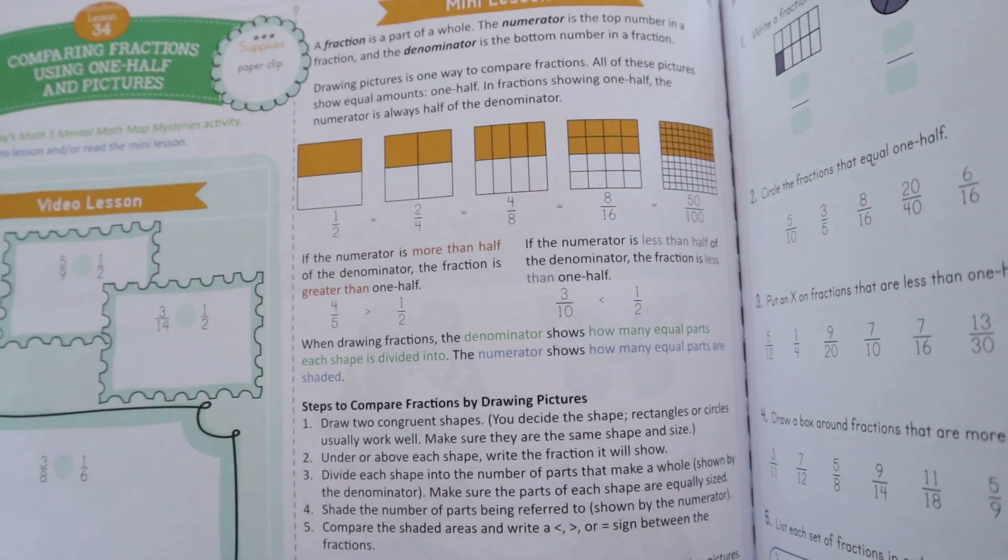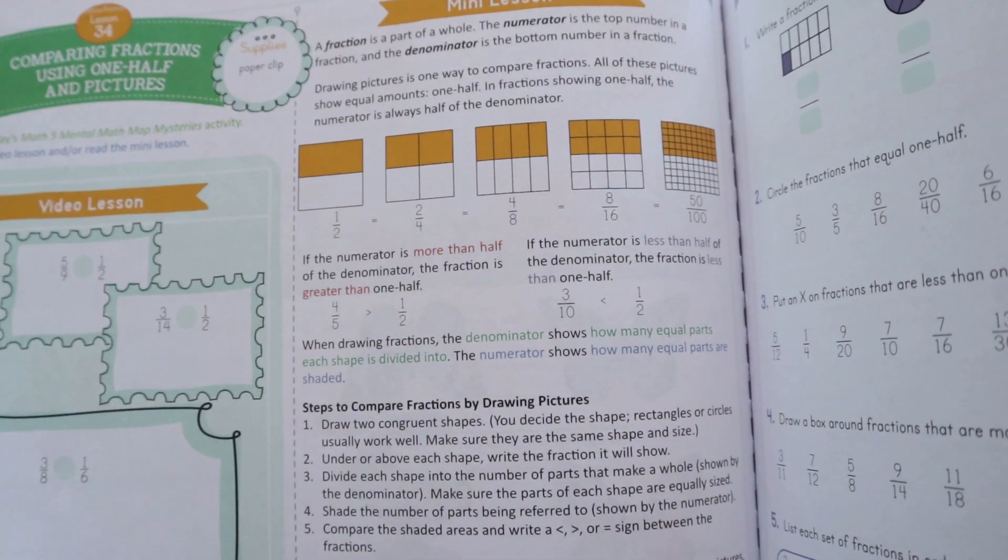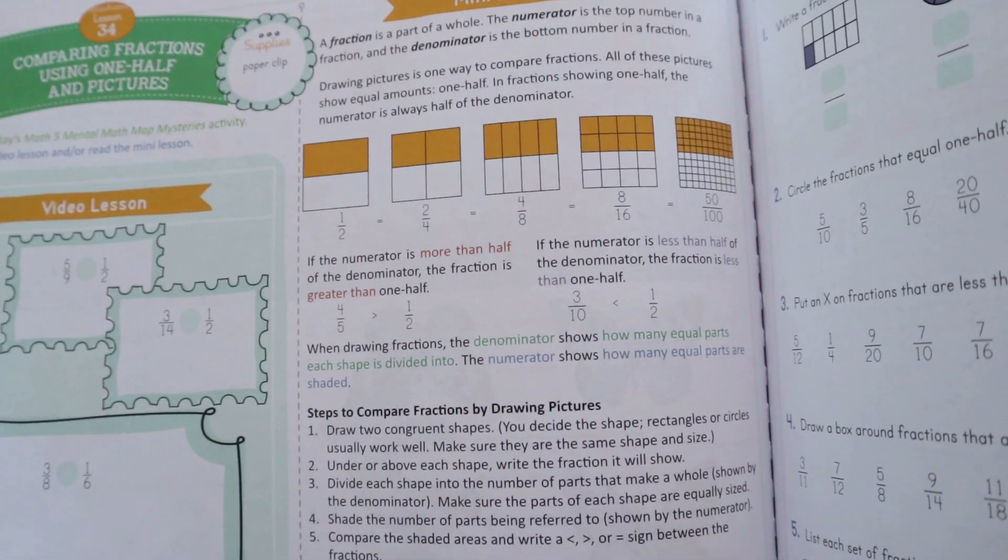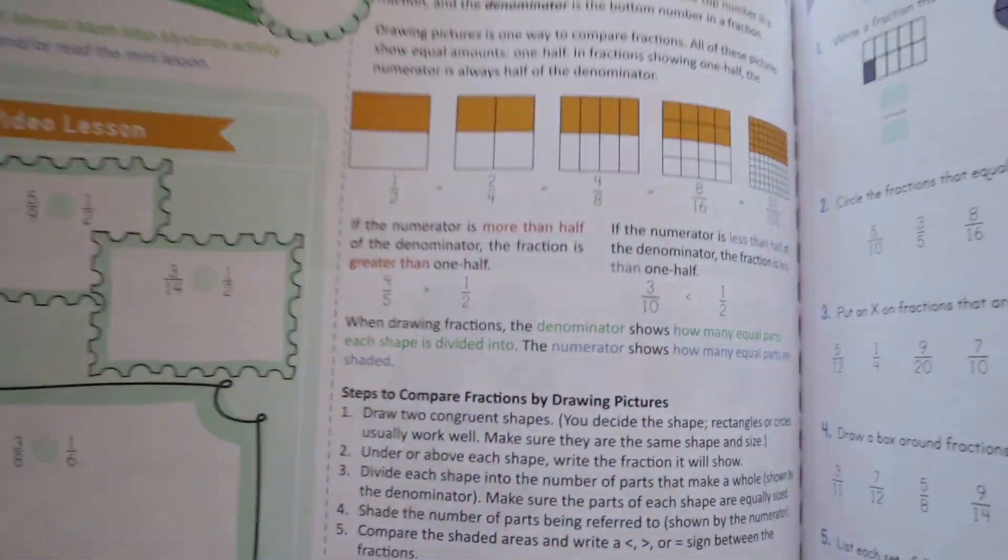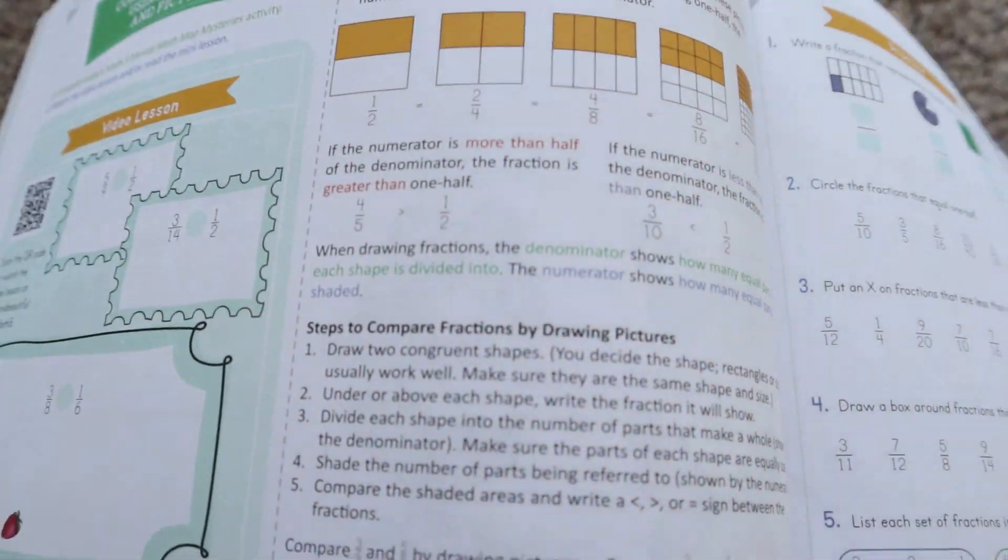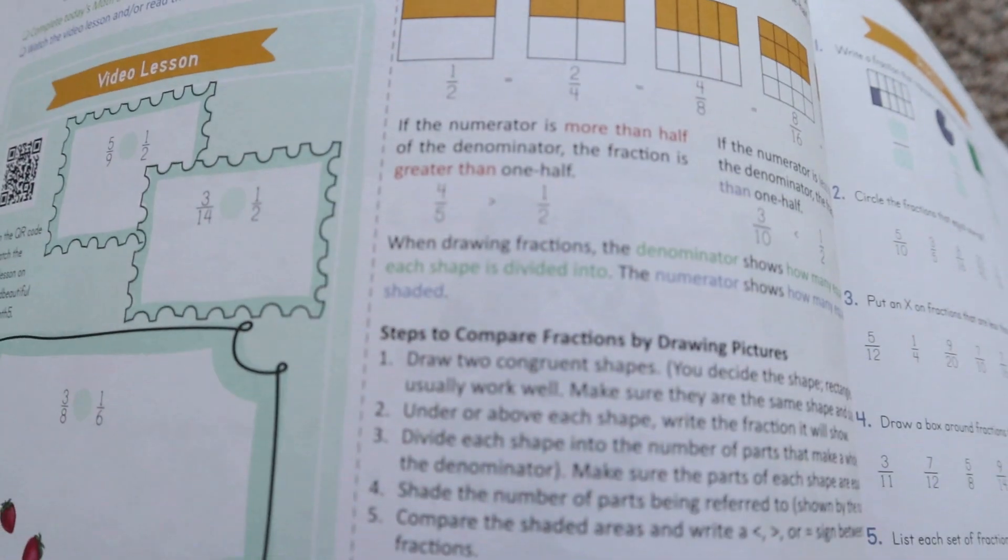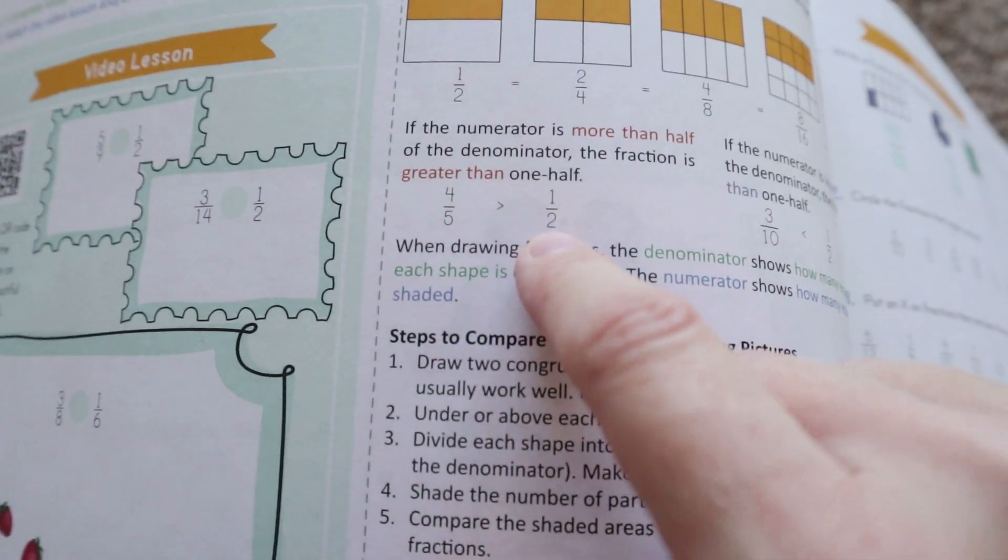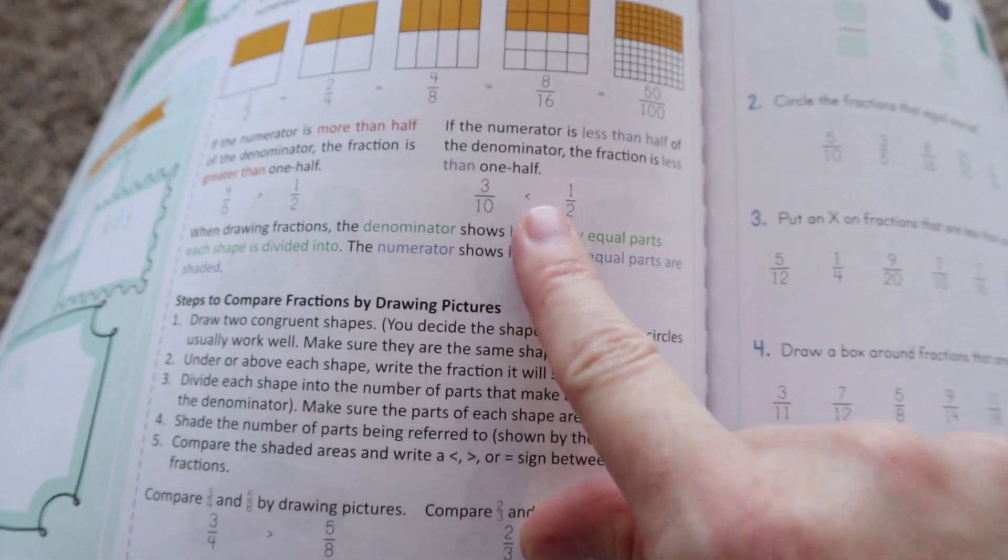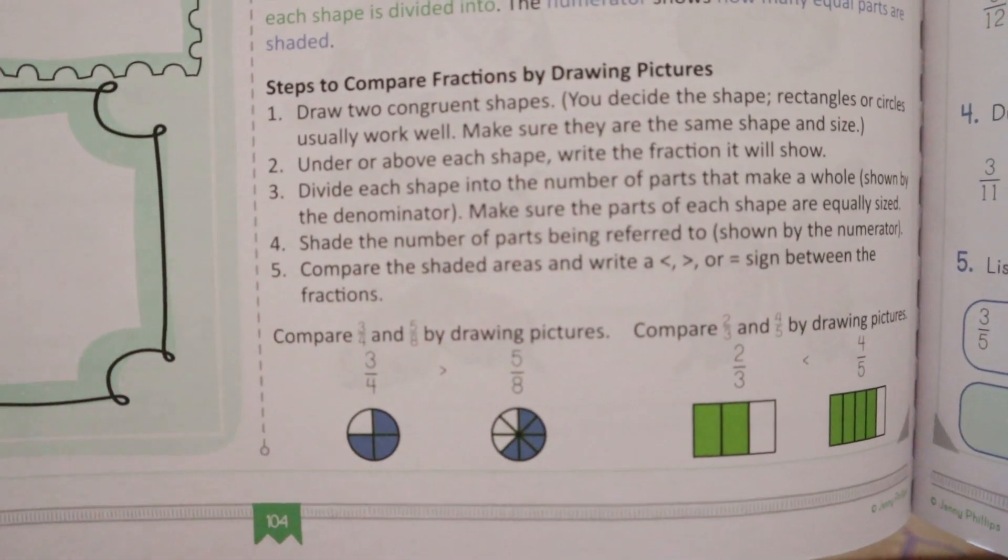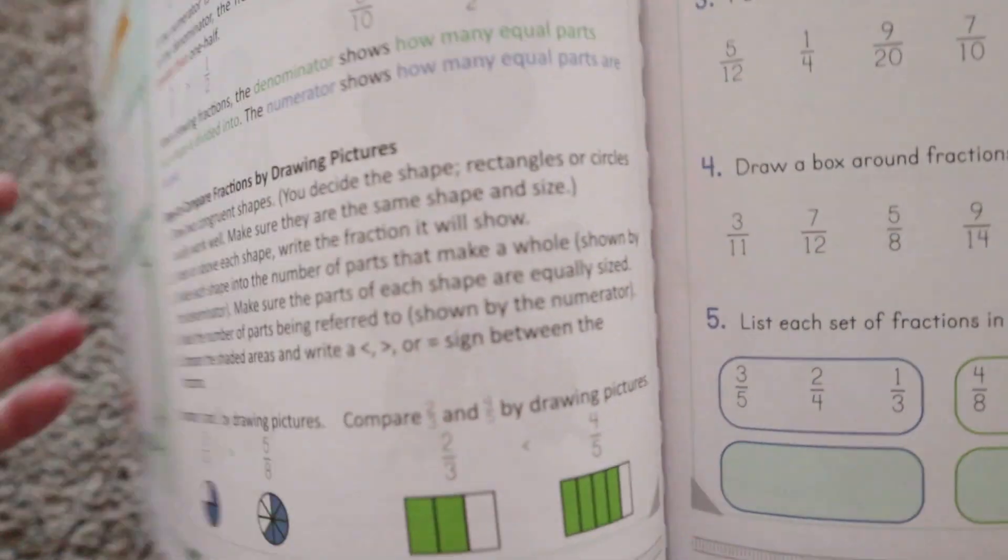So the mini lesson goes over what a fraction is compared to a whole it talks about the numerator and the denominator and what those are and then it says drawing pictures is one way to compare the fractions all of these pictures show equal amounts and then it goes over all of the amounts for each one of those fractions right here and then it talks about if the numerator is more than half of the denominator the fraction is considered greater than one half and so four fifths is greater than one half and then if the numerator is less than half of the denominator the fraction is less than one half and then it goes over steps to compare fractions by drawing pictures it will give your child some additional information and then two example problems and then your child takes what they have learned and they go and practice it.